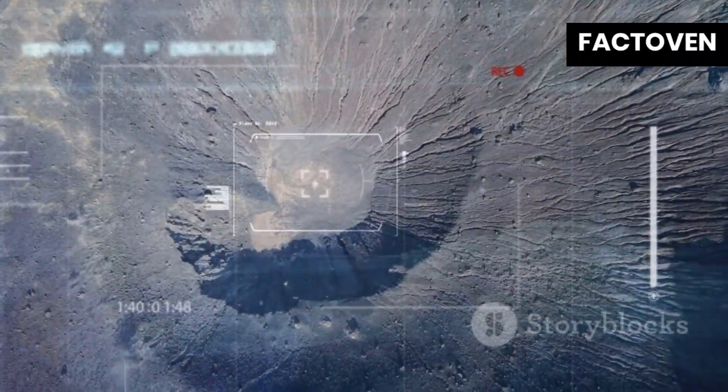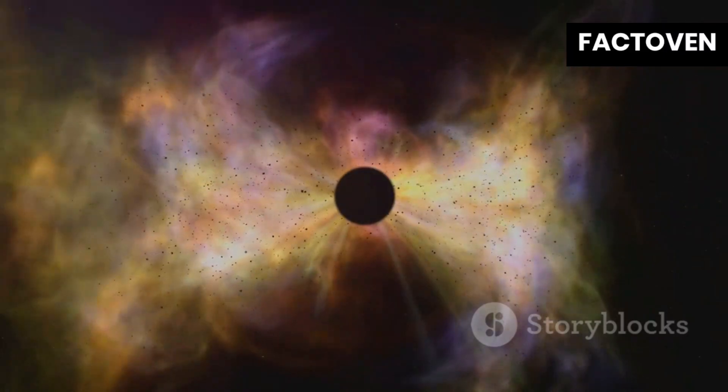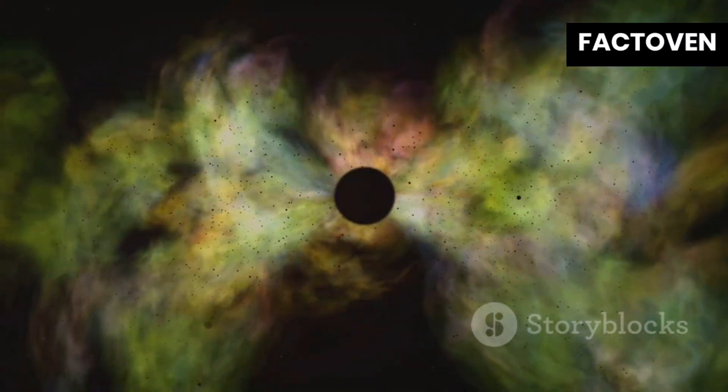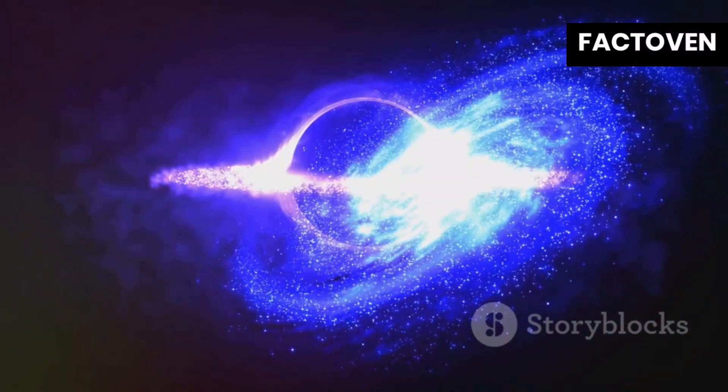Now imagine a strange anomaly on this map, a large cold region, colder than the surrounding areas. This is the CMB cold spot, one of the most puzzling anomalies in cosmology.